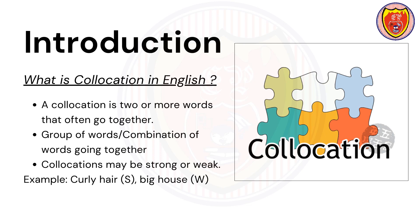There are strong and weak collocations. Strong collocations are where the link between the words is quite fixed and very restricted — you may not be able to use these words with any other group of words. An example of a strong collocation is 'curly hair'. A weak collocation would be 'a big house', where the word 'big' can be used with various other nouns, and the word 'house' can be used with various other adjectives. That is why it is termed a weak collocation.